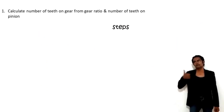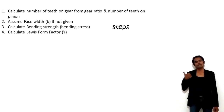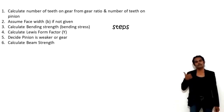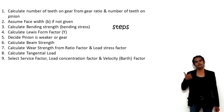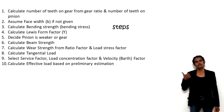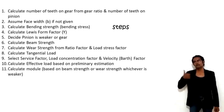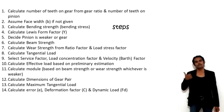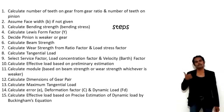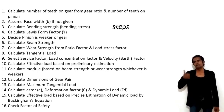Summary of all steps: (1) Calculate number of teeth on gear. (2) Assume face width. (3) Calculate bending strength. (4) Calculate Lewis form factor. (5) Decide if pinion or gear is weaker. (6) Calculate beam strength. (7) Calculate wear strength. (8–10) Calculate tangential load, select service/concentration/velocity/Barth factors, calculate effective load (preliminary). (11) Calculate module. (12) Calculate all gear dimensions. (13) Calculate maximum tangential load. (14) Calculate error, deformation factor, and dynamic load. (15) Calculate effective load based on precise dynamic load estimation. (16) Check factor of safety.